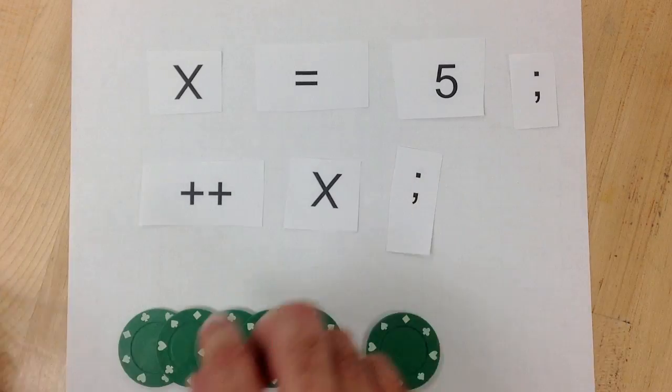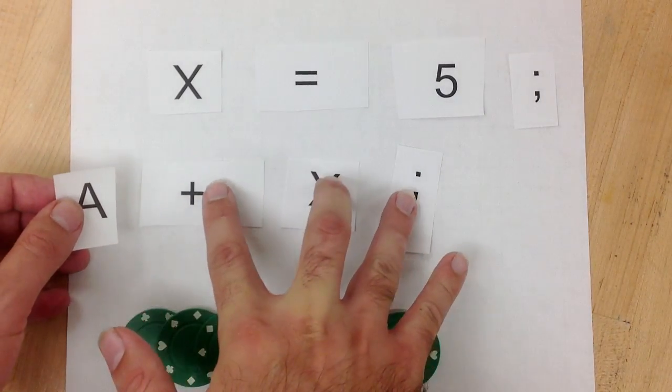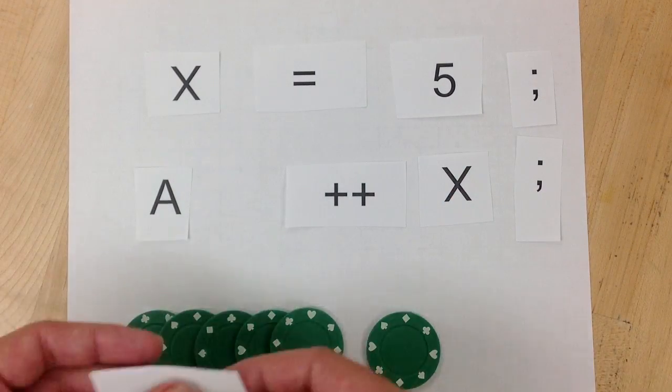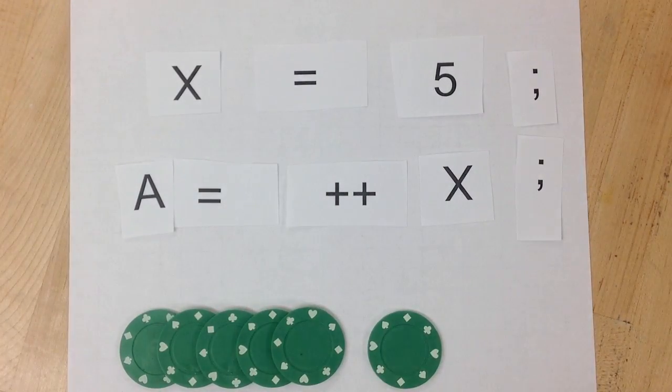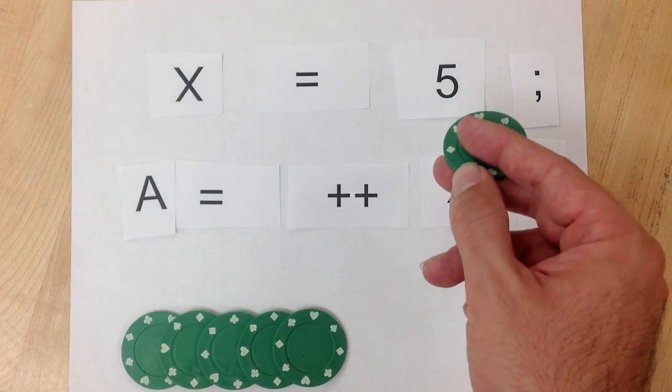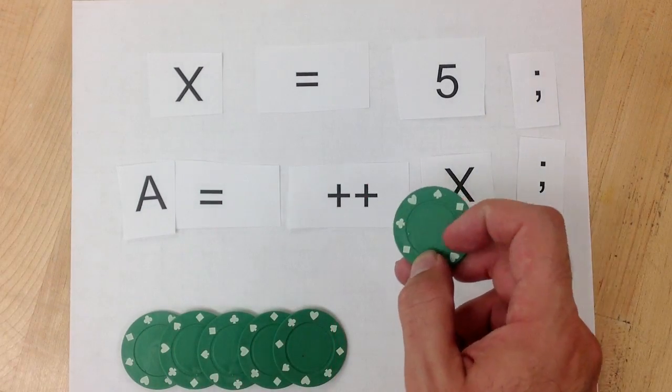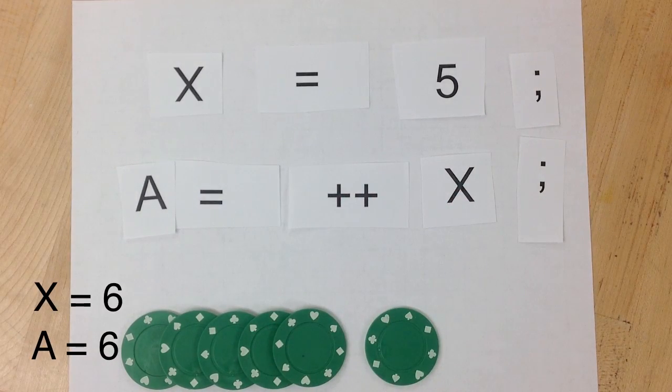The difference comes when you add another variable. So we start out with x equals 5, so we have 5 chips. A equals ++x, so A gets what x is equal to if we add a chip, so A is going to come out with 6.